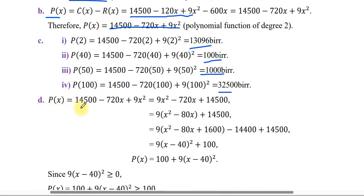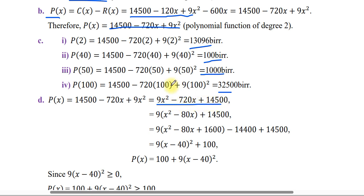P(X) = C(X) subtracted from R(X) = 14,500 minus 720X + 9X squared, which equals 9X squared minus 720X + 14,500. This is a quadratic function of degree 2.